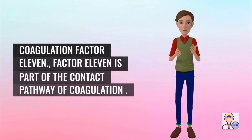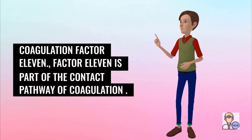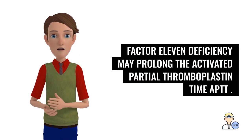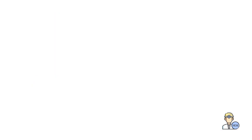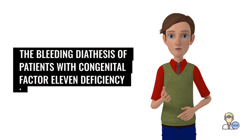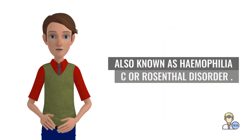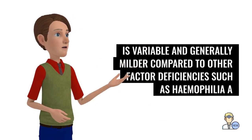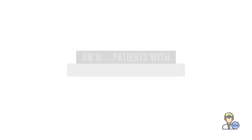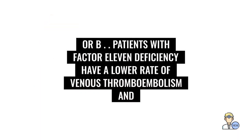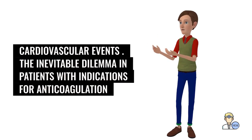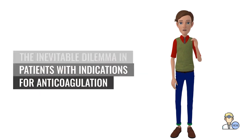Coagulation Factor XI: Factor XI is part of the contact pathway of coagulation. Factor XI deficiency may prolong the activated partial thromboplastin time (APTT) with no significant effect on prothrombin time (PT) or INR. However, the bleeding diathesis of patients with congenital factor XI deficiency, also known as hemophilia C or Rosenthal disorder, is variable and generally milder compared to other factor deficiencies such as hemophilia A or B. Patients with factor XI deficiency have a lower rate of venous thromboembolism and cardiovascular events.